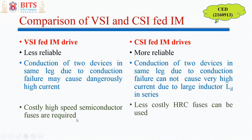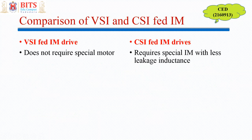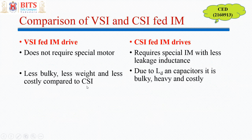Due to very high fault current in VSI, you require costly high-speed semiconductor fuses, while in CSI you can work with less costly, relatively slow HRC fuses because the current magnitude is not that high. CSI requires a special induction motor with less leakage inductance, because large leakage inductance produces large L·di/dt voltage spikes which are dangerous for insulation. VSI-fed induction motor drives are less bulky, lighter, and less costly compared to current source inverters, which are bulky, heavy, and costly due to the large inductor and capacitors.